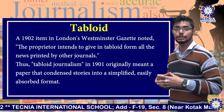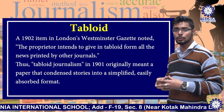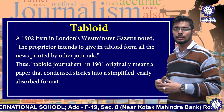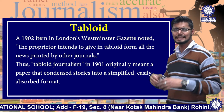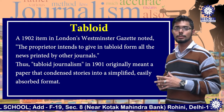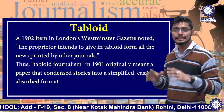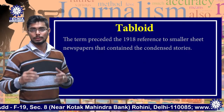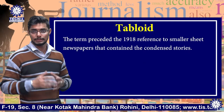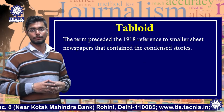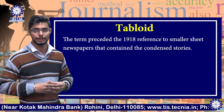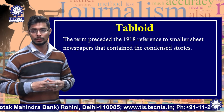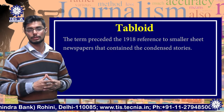Thus, tabloid journalism originally meant a paper that condensed stories into a simplified, easily absorbed format. The term preceded the 1918 reference to smaller sheet newspapers that contained condensed stories.